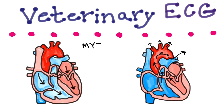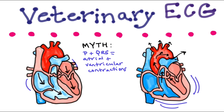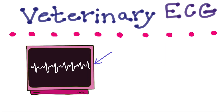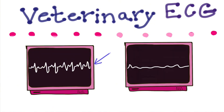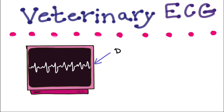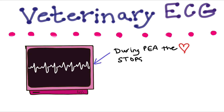A common misconception is that the P and QRS waves represent atrial and ventricular contractions — they don't. They just indicate the pathway of electrical activity inside the heart. This is important because of a phenomenon called PEA, pulseless electrical activity, one of the most common arrest rhythms in dogs and cats besides asystole. During PEA, the patient's heart stops beating, but the ECG tracing can show a normal waveform on the monitor.